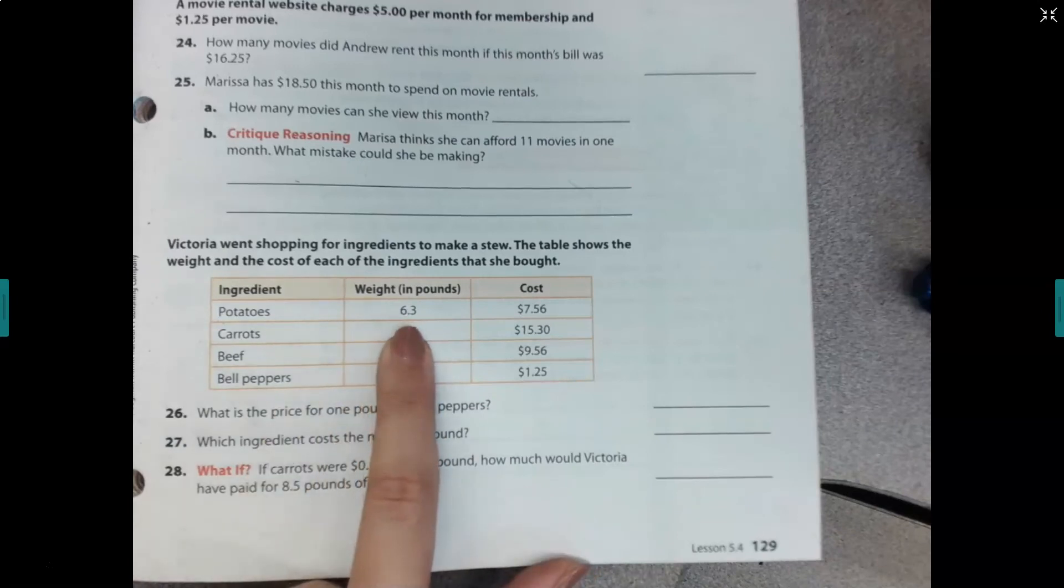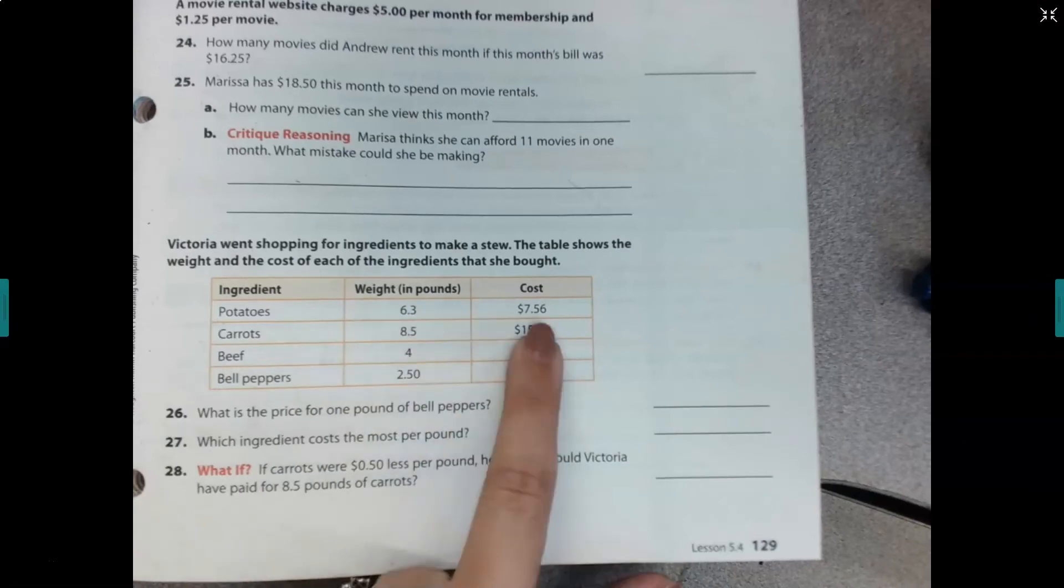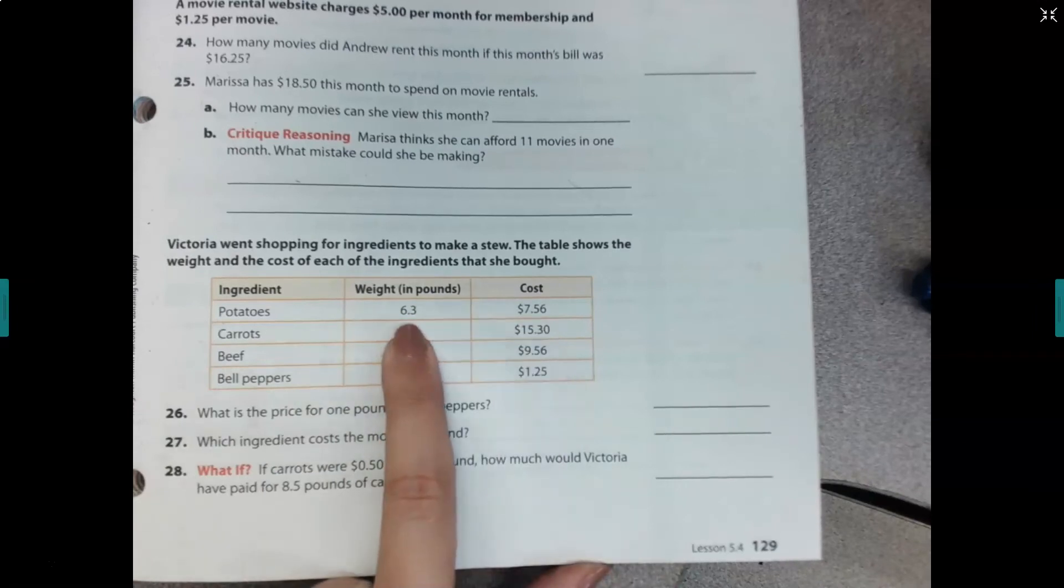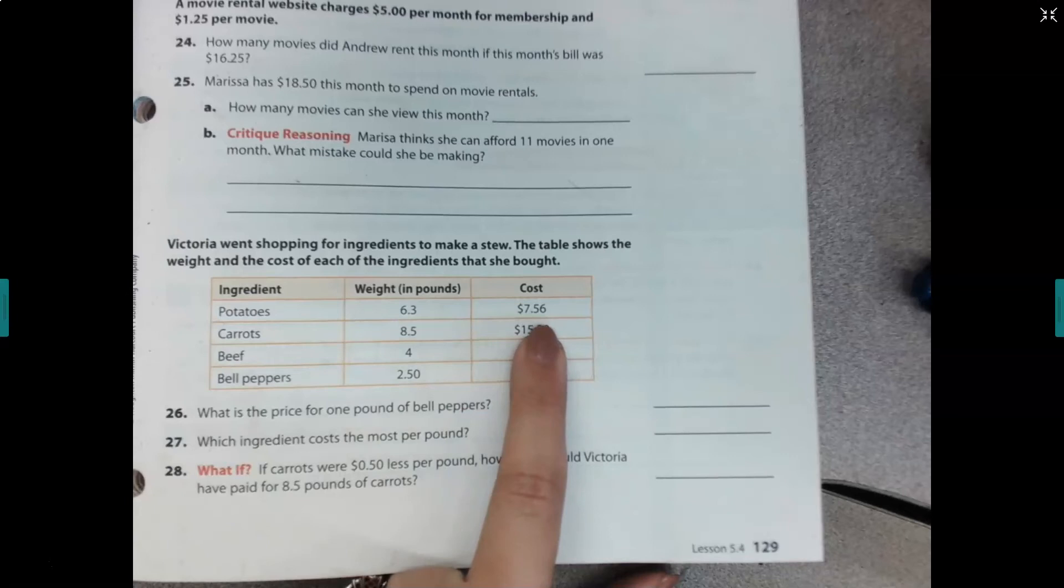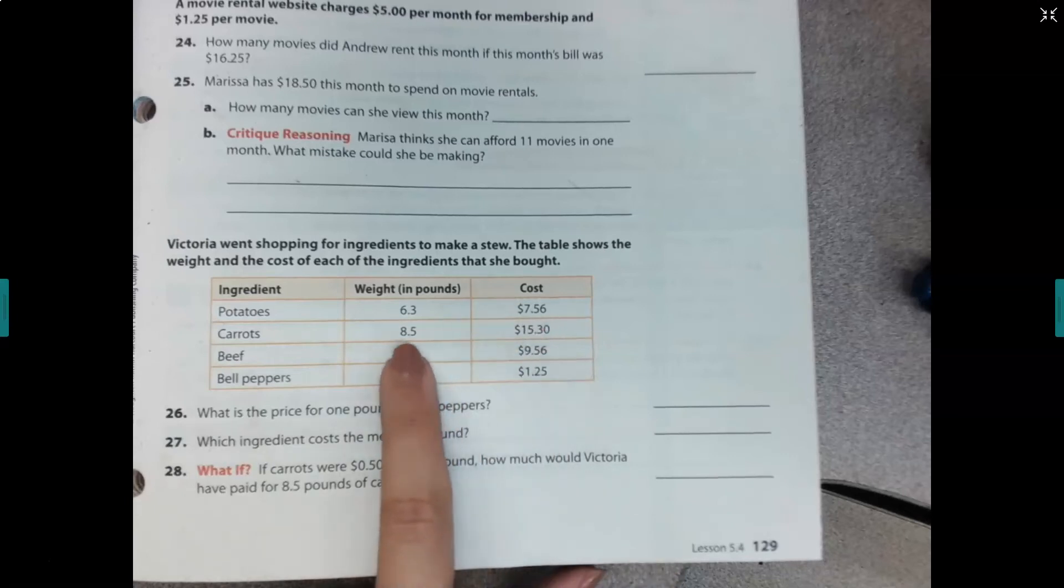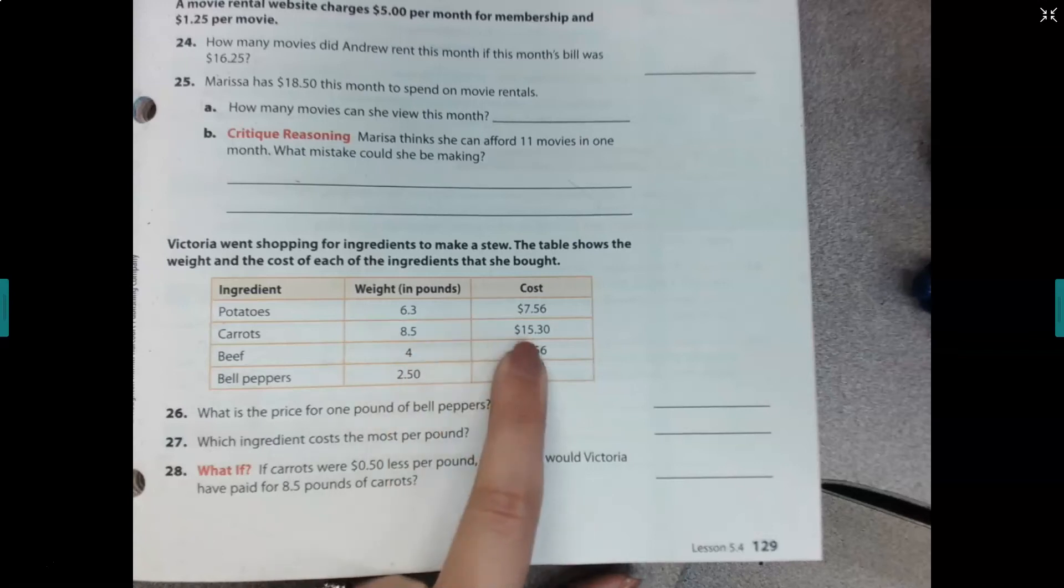Because if it costs exactly $1 per pound, the cost would have been $6.30. Same thing here. If this costs exactly $1 per pound, my cost would be $8.50, not $15.30.